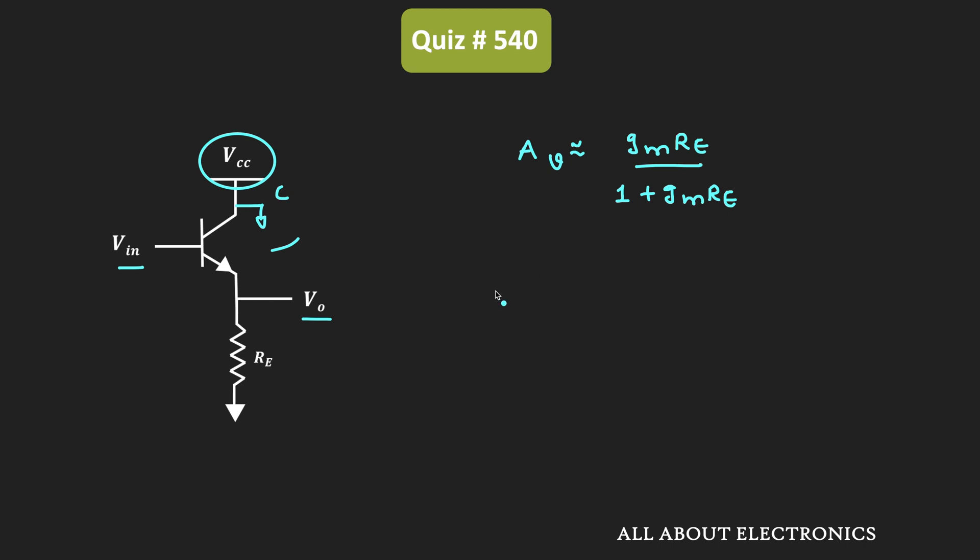As you can see from the equation, whenever this gm times Re is much greater than 1, at that time, this voltage gain is approximately equal to 1. In that condition, it is almost independent of the value of Re. That means to get the constant voltage gain, this condition should get satisfied.